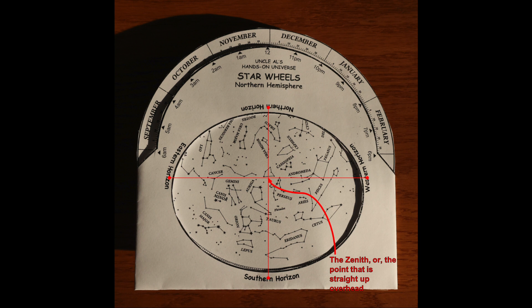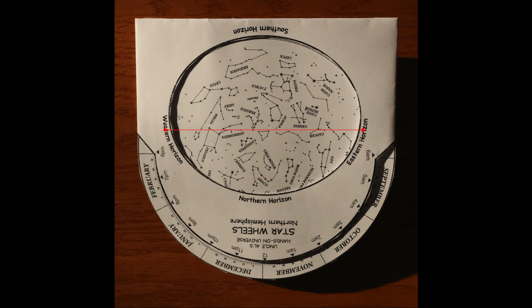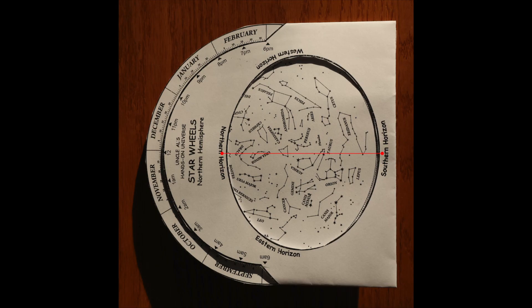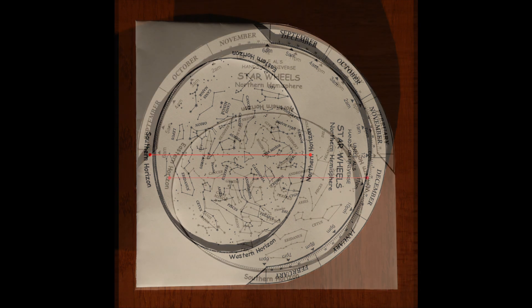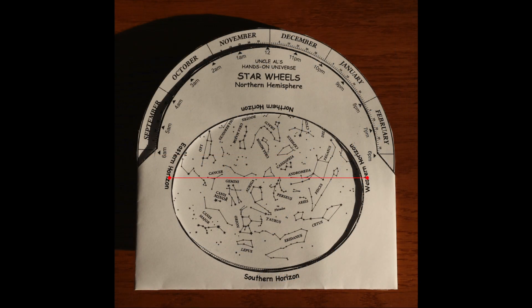Now if you hold the planisphere so that the southern horizon is towards you and you look to the south, you'll see everything below the zenith or everything in the half of the viewing window that's closer to you from that horizontal line. The same is true if you look to the north or to either the east or the west. We're going to be looking to the southern sky for this.